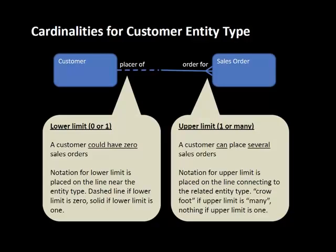If the upper limit is one, the notation is just a straight line — basically nothing extra, because there's already a line there. If there's nothing indicated, the upper limit is one. If the upper limit is many, you see the crowfoot. So: upper limit is crowfoot or no crowfoot; lower limit is dashed or solid.